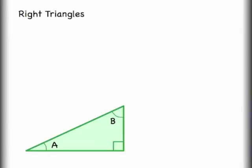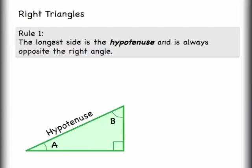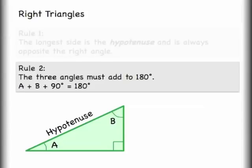Let's take this right triangle here to talk about a couple things. The hypotenuse is the name we give the longest side of the right triangle — it is always opposite the right angle. The angles within a right triangle, any triangle for that matter, must add up to 180 degrees. You can also say that angles A plus B must equal 90 degrees as a shortcut.